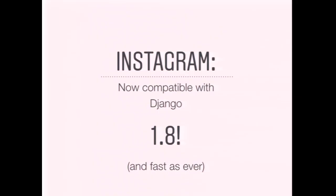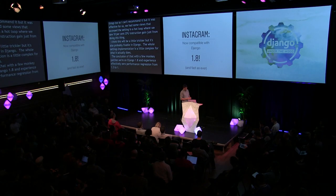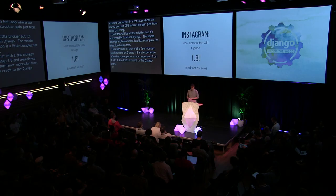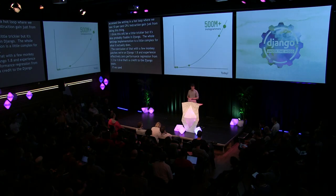With a few monkey patches, we're now on Django 1.8, and we experienced effectively zero performance regression from 1.3 to 1.8 — that's a credit to the Django team. If we still used the ORM, that might have been a different story.